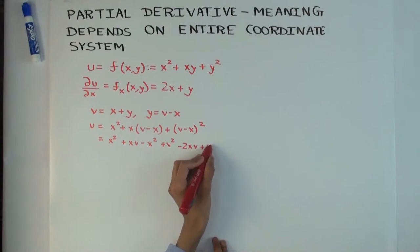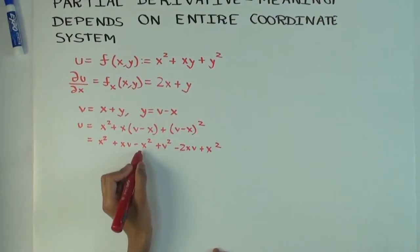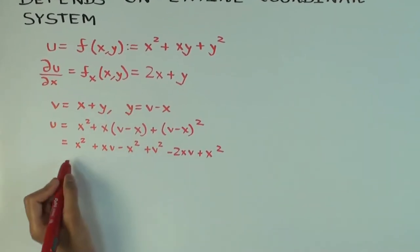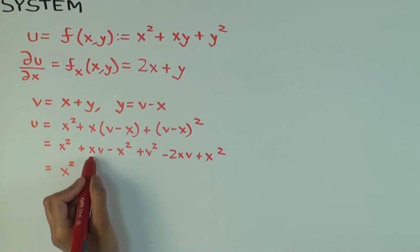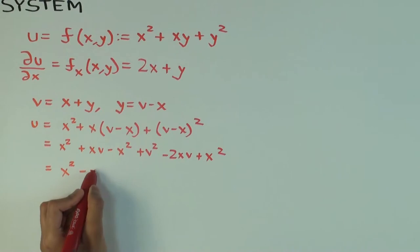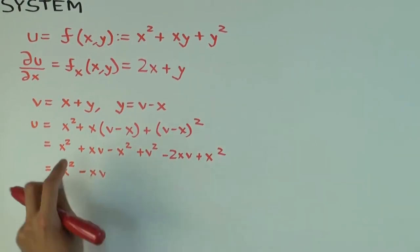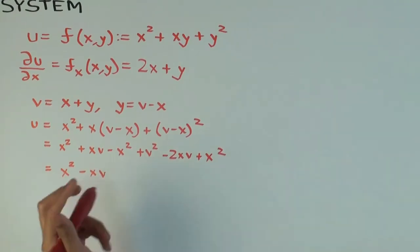So you have 2 positive x squared and 1 negative x squared, so overall you get 1 positive x squared. We have 1 positive xv and 2 negative xv, so you get overall 1 negative xv. So we've used up everything except v squared.